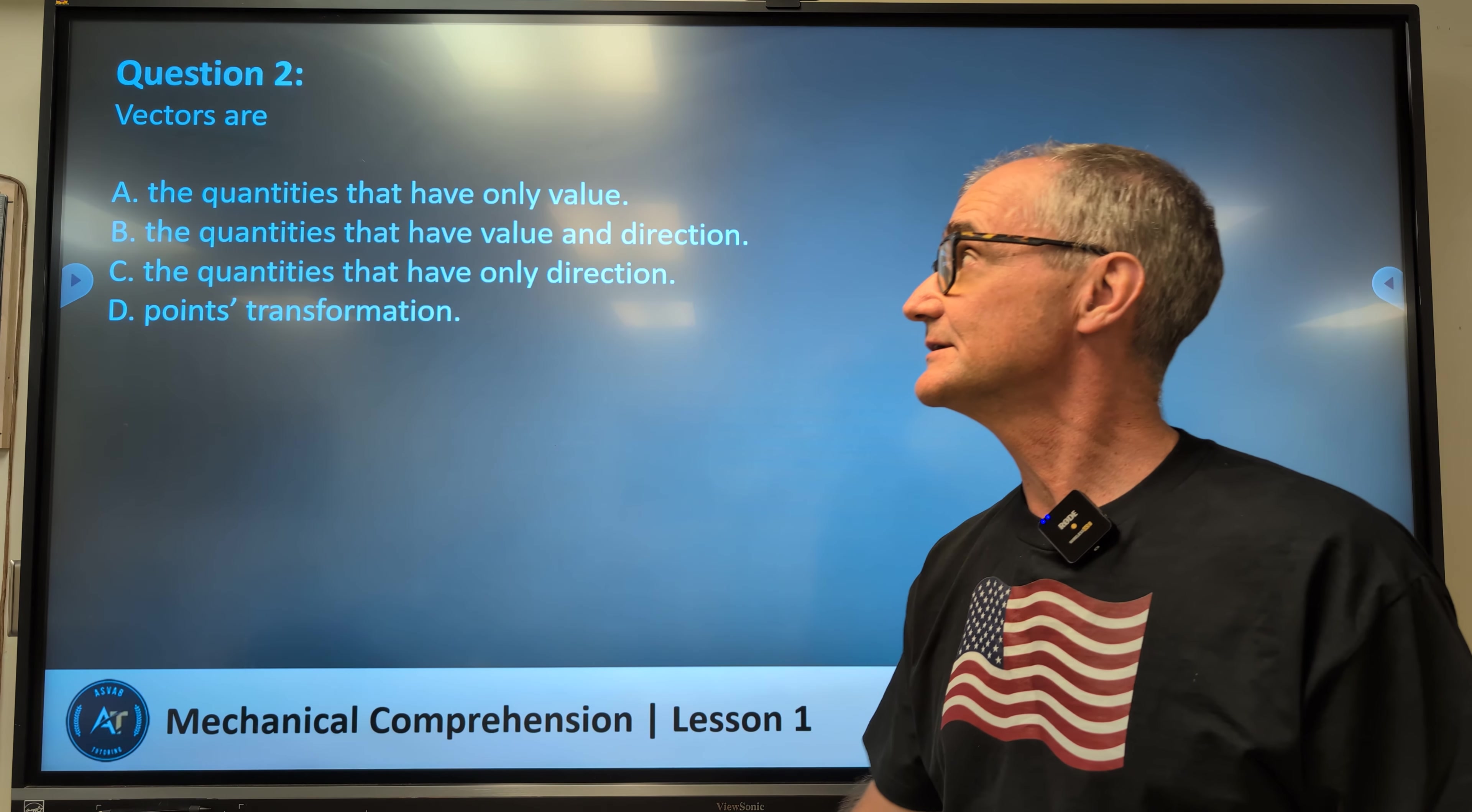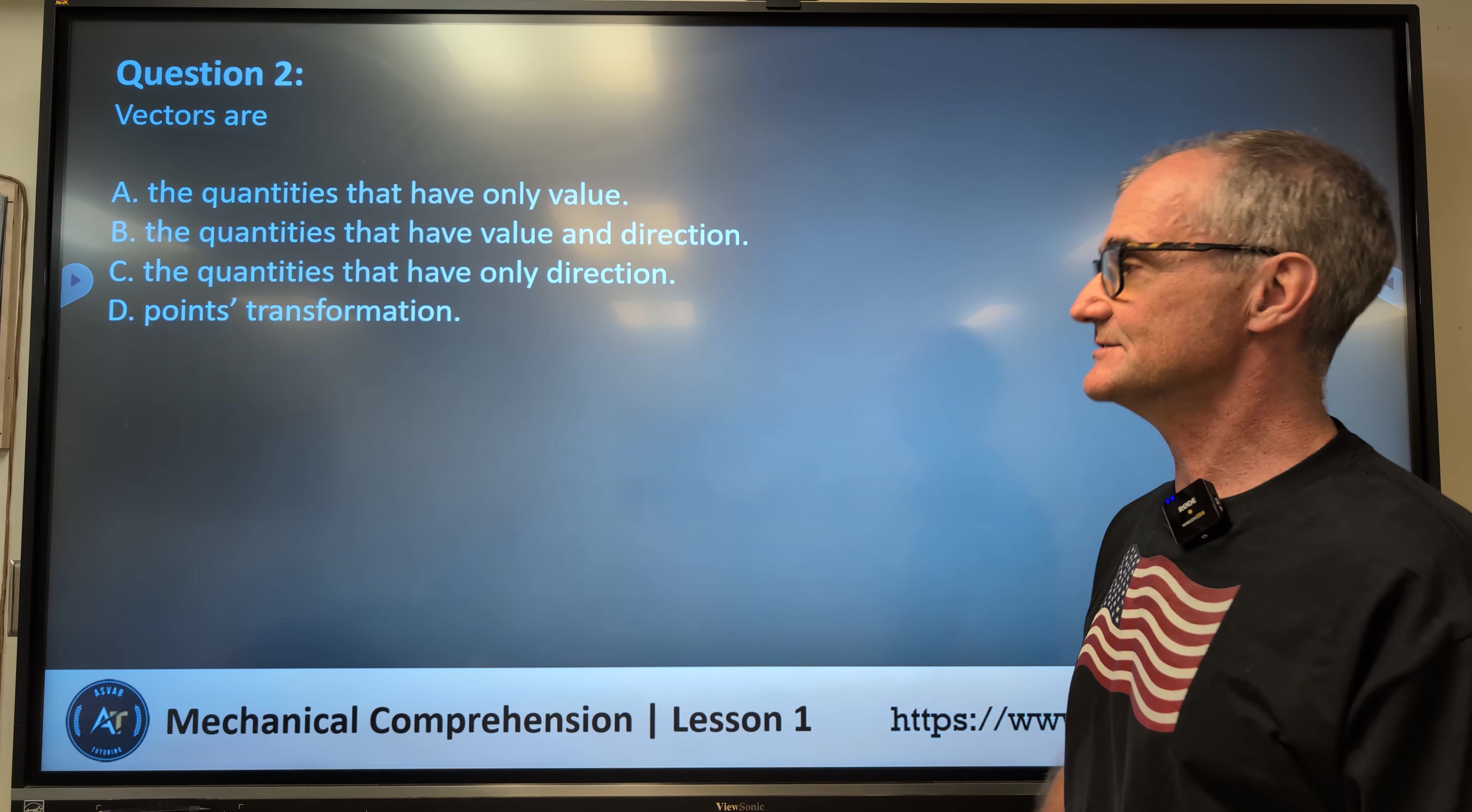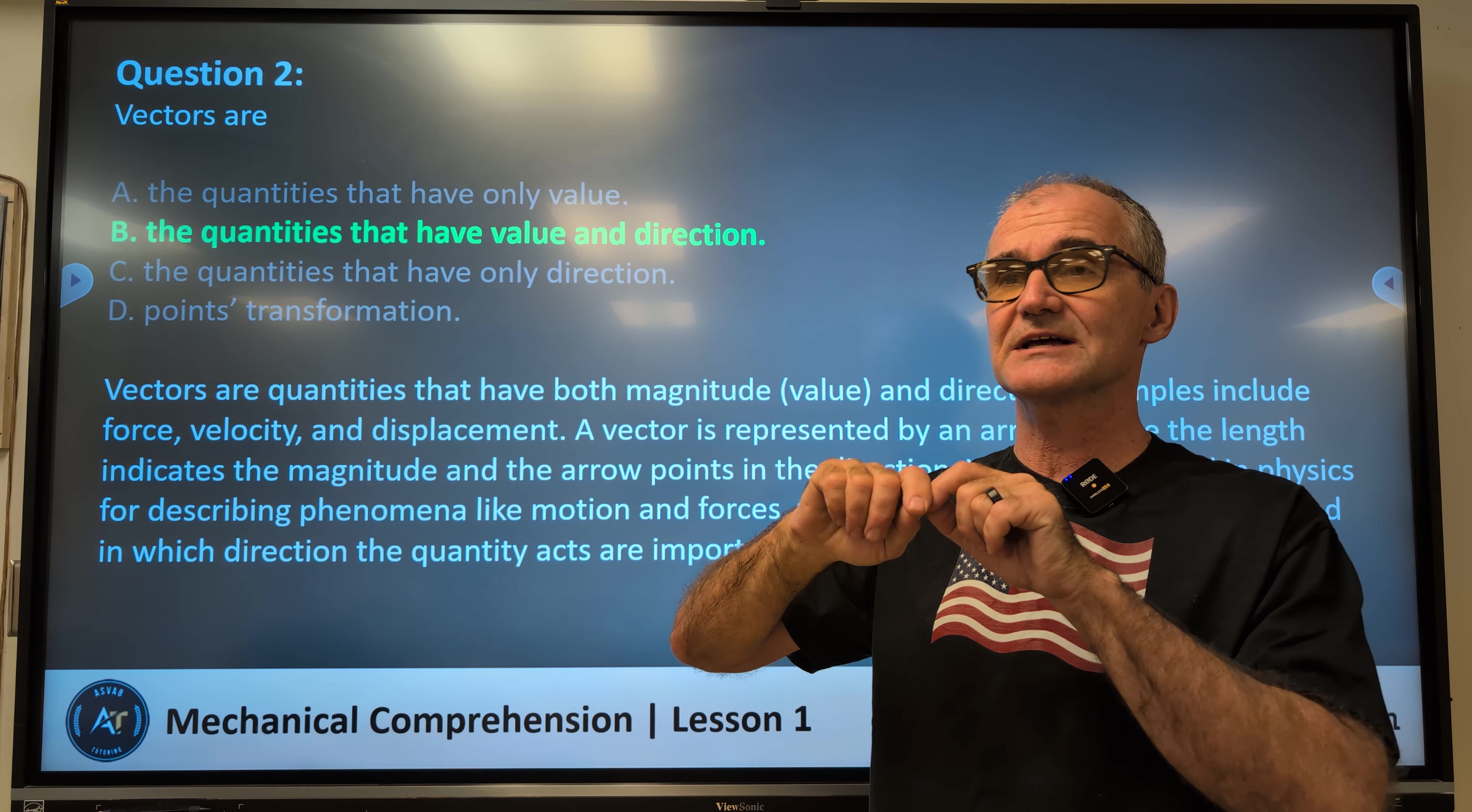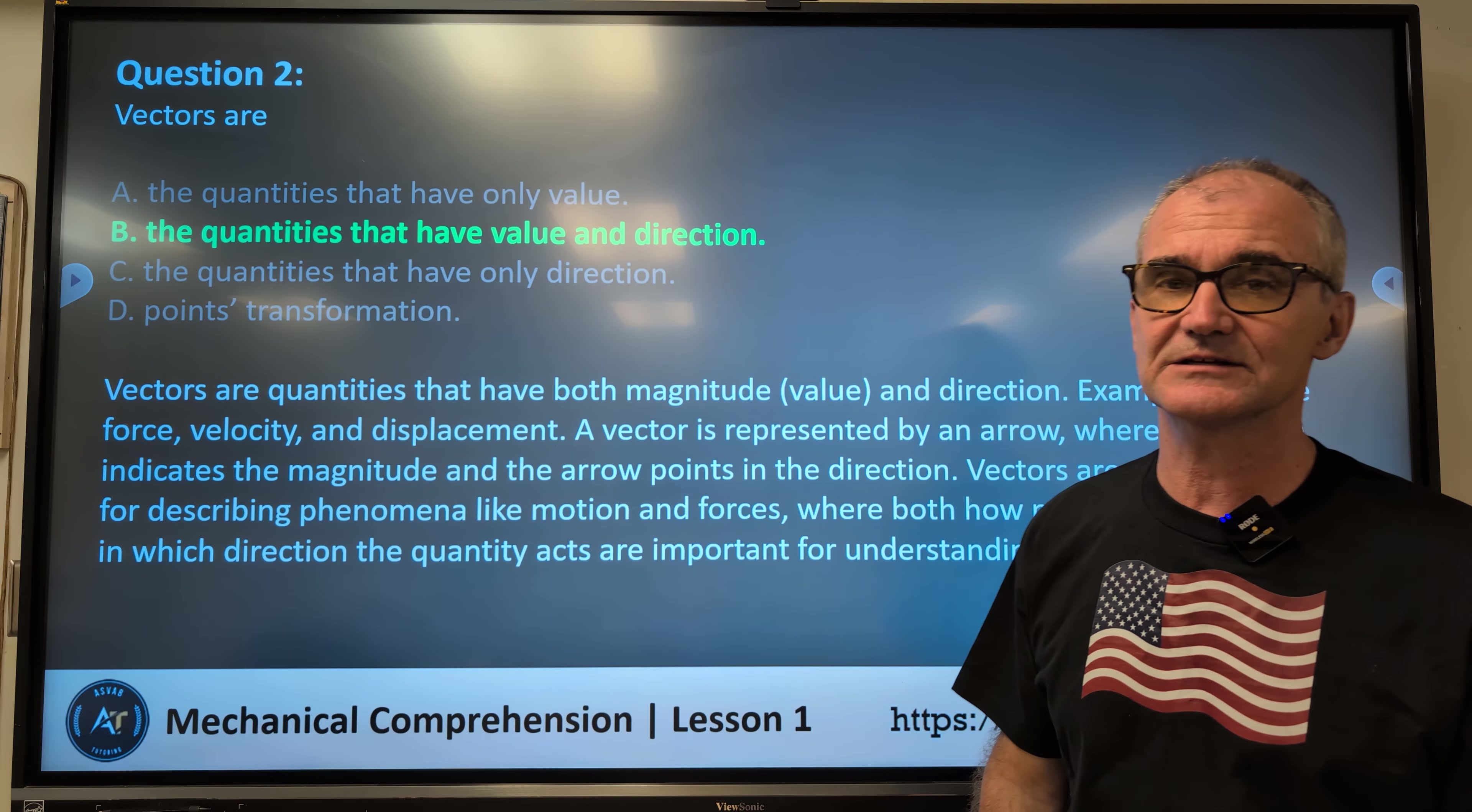Number two, vectors are: A, quantities that have only value, B, quantities that have value and direction, C, quantities that have only direction, or D, points transformation. So same series of answers, correct answer this time is going to be B. So again, a vector shows you both magnitude and direction. It could represent a distance traveled or a force, the way a car is traveling, the way a tank is traveling, or a projectile. A vector has both magnitude and direction. A scalar, only the singular magnitude.